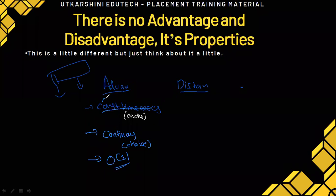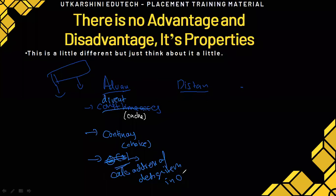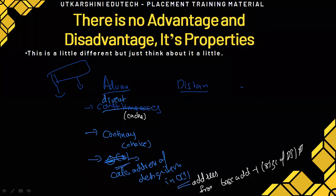So constant time access — also called direct access — means you can calculate the address of a desired item in constant time. You can calculate the address directly from the first item's address, which is called the base address, plus the size of the data structure times the index. For example, if you want the 10th item, you use index 9, and so on.